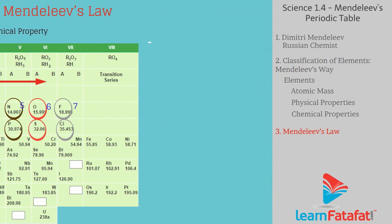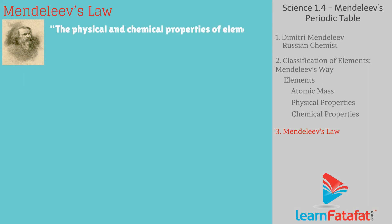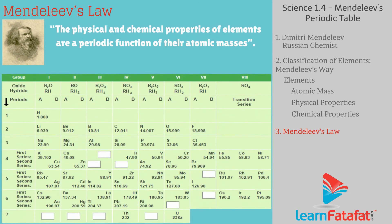Mendeleev's Law. Based on his research, Mendeleev formed a law called Mendeleev's Law, which states that the physical and chemical properties of elements are a periodic function of their atomic masses. The tabular arrangement of elements based on Mendeleev's Law is called Mendeleev's Periodic Table.